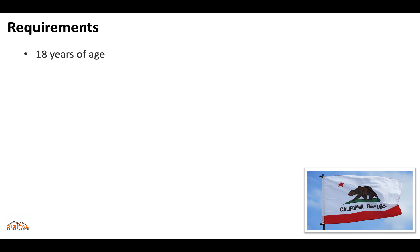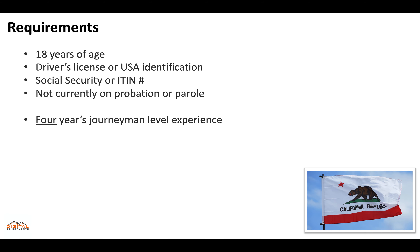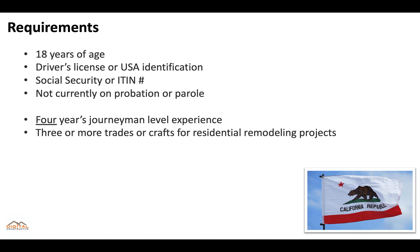The requirements are going to be the same as any other contractor license. You've got to be at least 18 years of age, have a driver's license or USA identification, a Social Security or I-10 number, and you can't currently be on probation or parole. You'll also need at least four years of journeyman-level experience in at least three or more trades or crafts for residential remodeling projects.